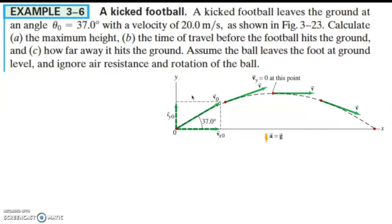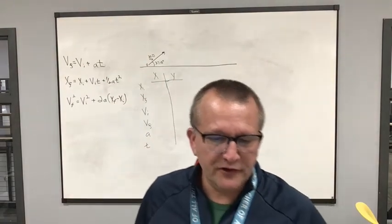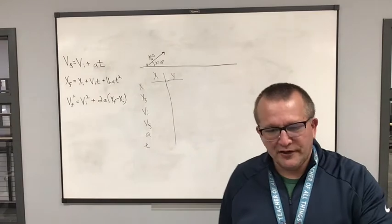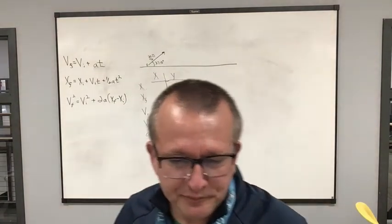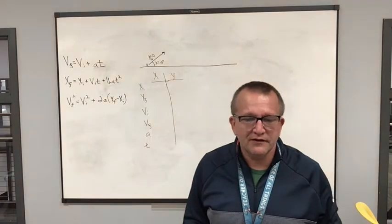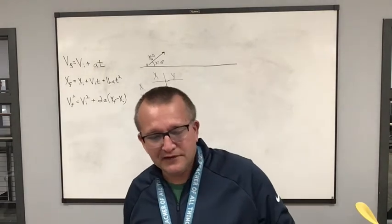Example 3.6: A kicked football leaves the ground at an angle of 37 degrees with a velocity of 20 meters per second. Calculate A) max height, B) the time of travel before the football hits the ground, and C) how far away it hits the ground. Assume the ball leaves the foot at ground level and ignore air resistance and rotation of the ball.